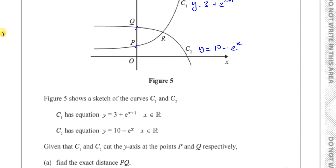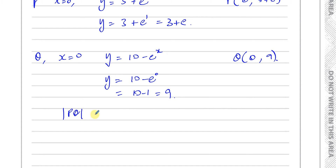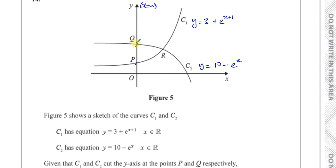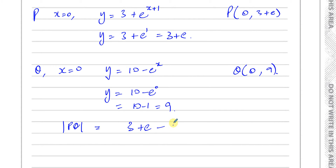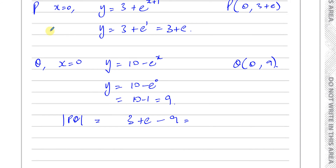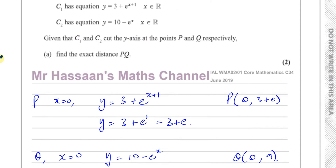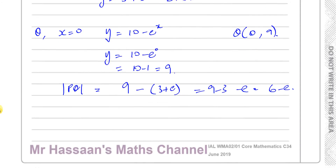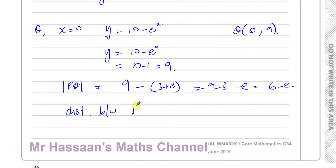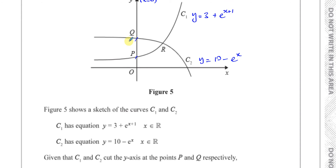To find the exact distance between P and Q, we take the y-coordinate of Q minus the y-coordinate of P. It's better to write it as 9 minus (3 plus e) to get a positive value, which gives 9 minus 3 minus e, which is 6 minus e. So the distance between P and Q is 6 minus e. That's the answer to part A.